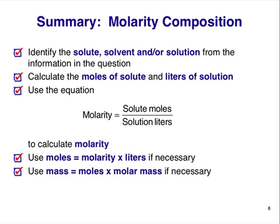The strategy for these sorts of problems — in fact any multi-step calculation in chemistry — is to remain flexible. You'll need to use the information in the question and a few basic mathematical equations to develop a strategy for solving on the fly. Think about what information you're given, what information you need to get, and the steps necessary to get you the quantities you need. Chemistry is all about using the basic tools you've been taught to solve problems you've never seen before.